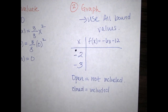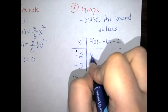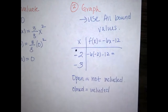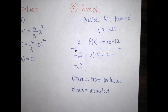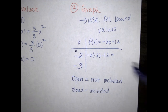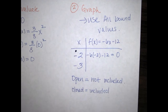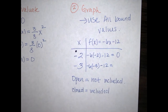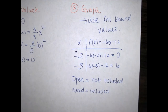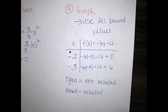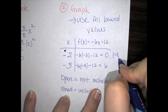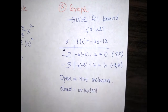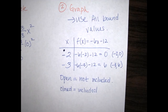Plugging in: negative 6 times negative 2 minus 12 gives positive 12 minus 12, which equals 0. Then negative 6 times negative 3 minus 12 gives positive 18 minus 12, which equals 6. So my two coordinate points are negative 2, 0 and negative 3, 6. That is the first part of the piecewise function.